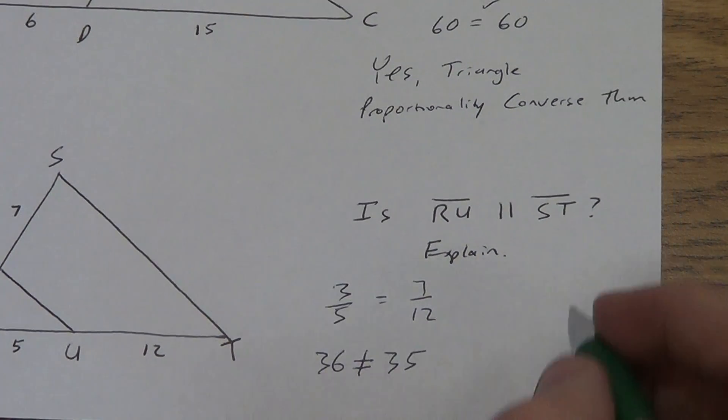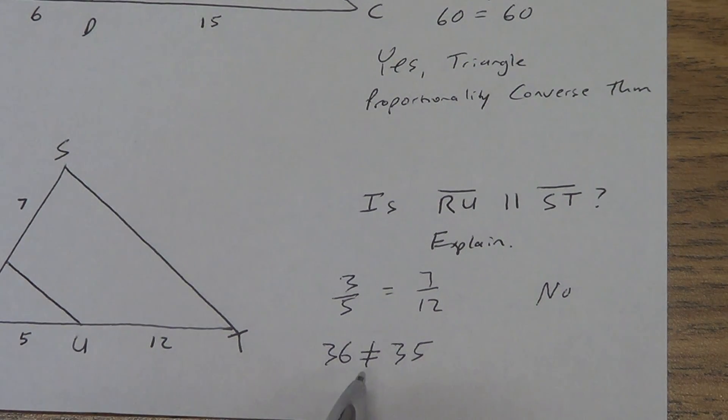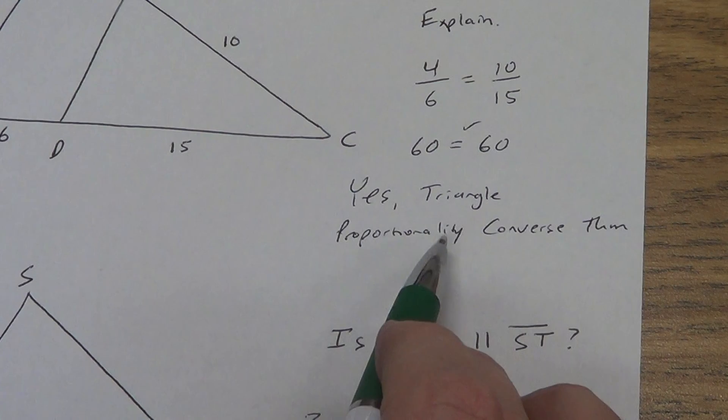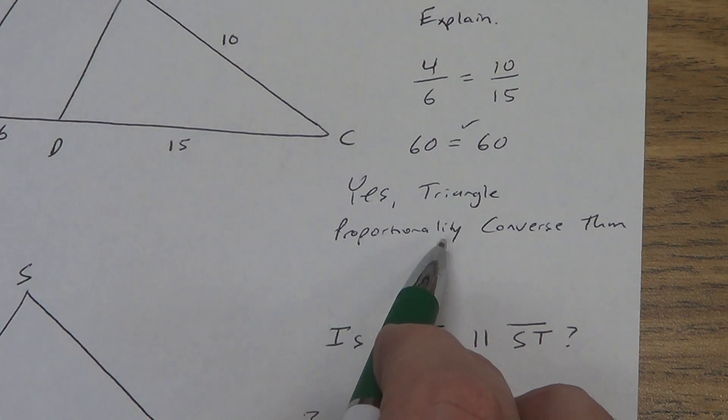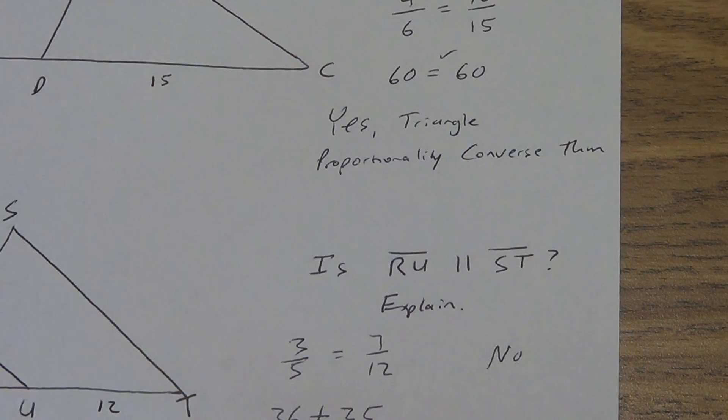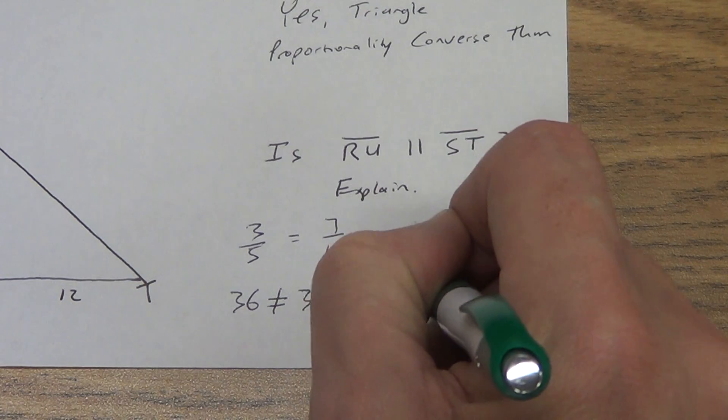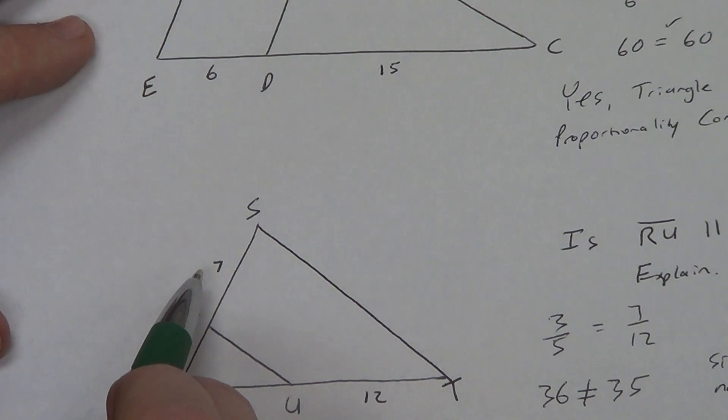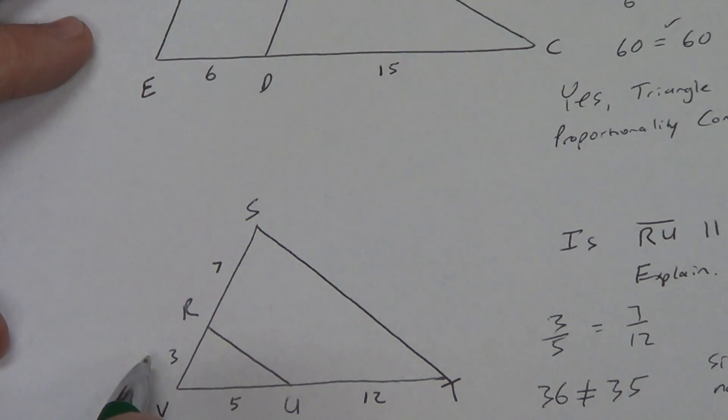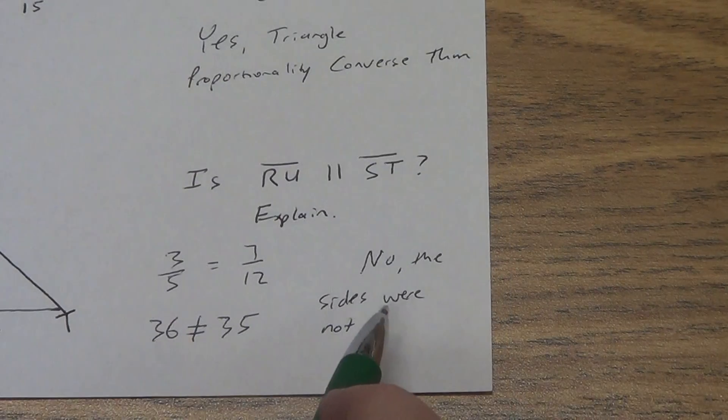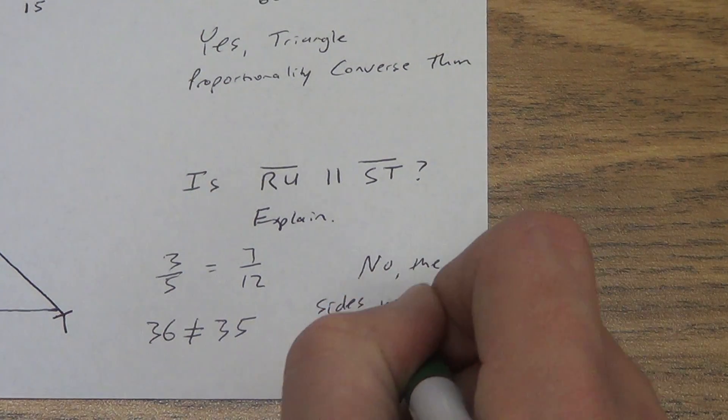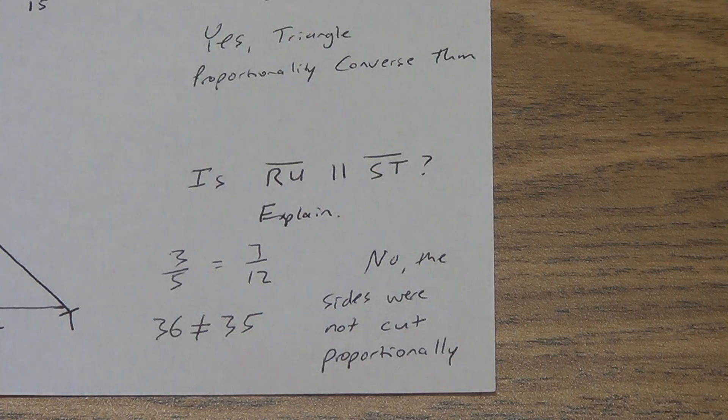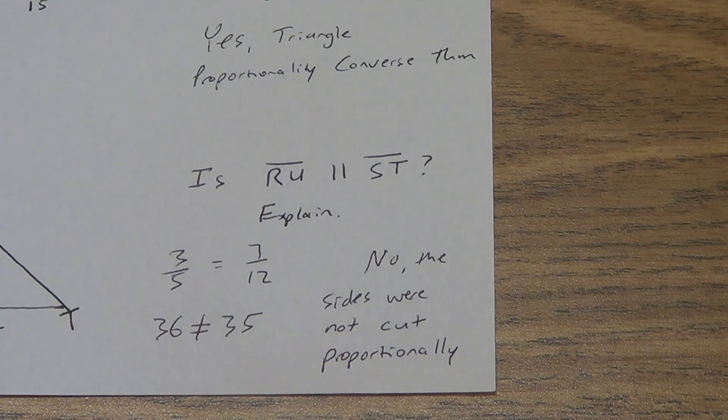They're not equal. So, are the lines parallel? No. They're really close. So that means they're almost parallel, but almost parallel means they're not parallel. Explain. Well, you can't use this theorem because the theorem says they have to be parallel and the proportion had to work. So we have to explain the no a little bit differently. The easiest thing to say is this: don't say the sides were not proportional because 7 isn't a side, 3 isn't a side, 10 is the side. We say the sides were not cut or were not divided proportionally. Just make sure you phrase that correctly.